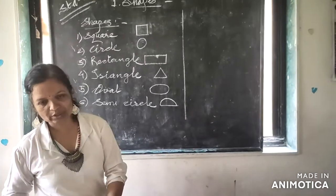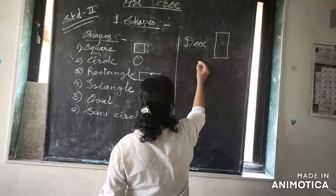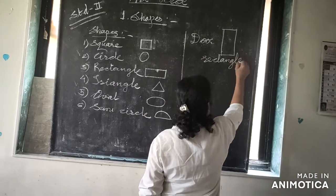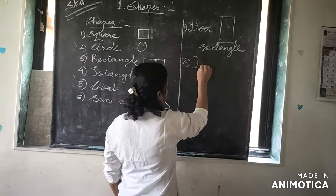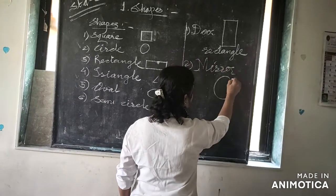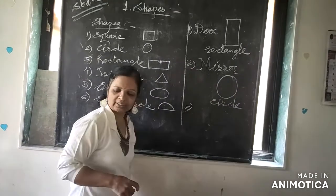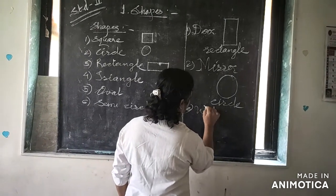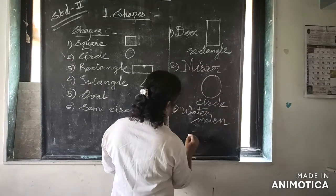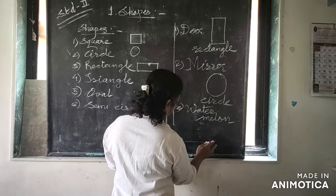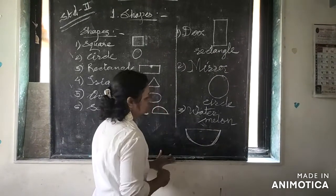The first one is a door — it is rectangle. Write rectangle there. Next is a mirror — it is circle. And the next one is watermelon. How does it look? It looks like a semi-circle shape.